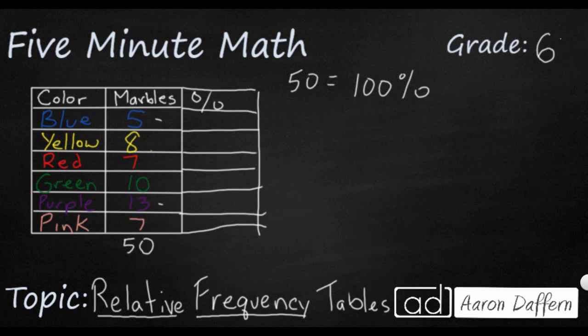So 5 out of the 50 is blue. 8 out of the 50 is yellow and so on. And what you're going to see is that once we have these fractions here, now we can divide, we can make decimals, and then turning from a decimal to a percent is fairly simple.